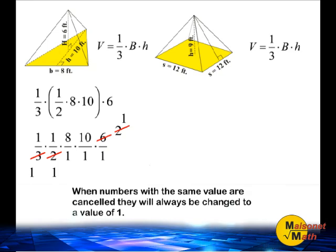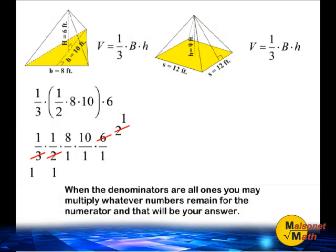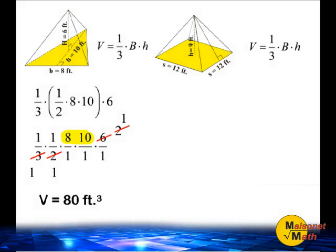Notice at this point that all of our denominators are the number 1. And when this is true, you can simply multiply the numbers remaining on the top and that will be your answer. We have an 8 and a 10 remaining for our numerators, and 8 times 10 is 80. So the volume of the triangular pyramid is 80 cubic feet.